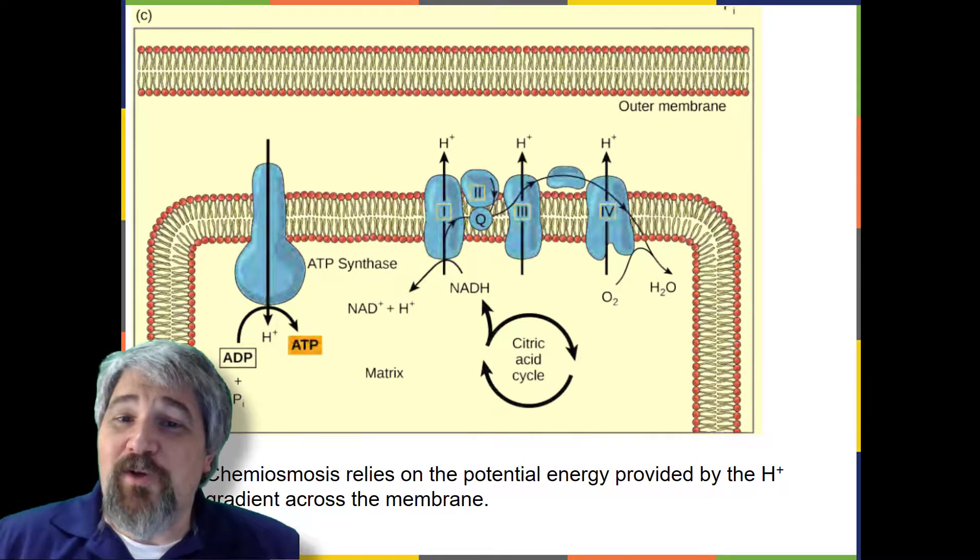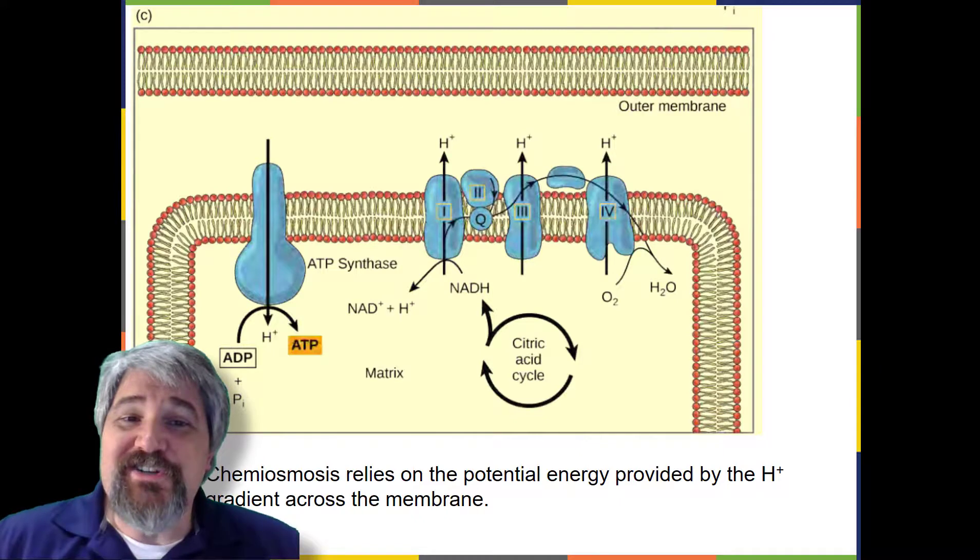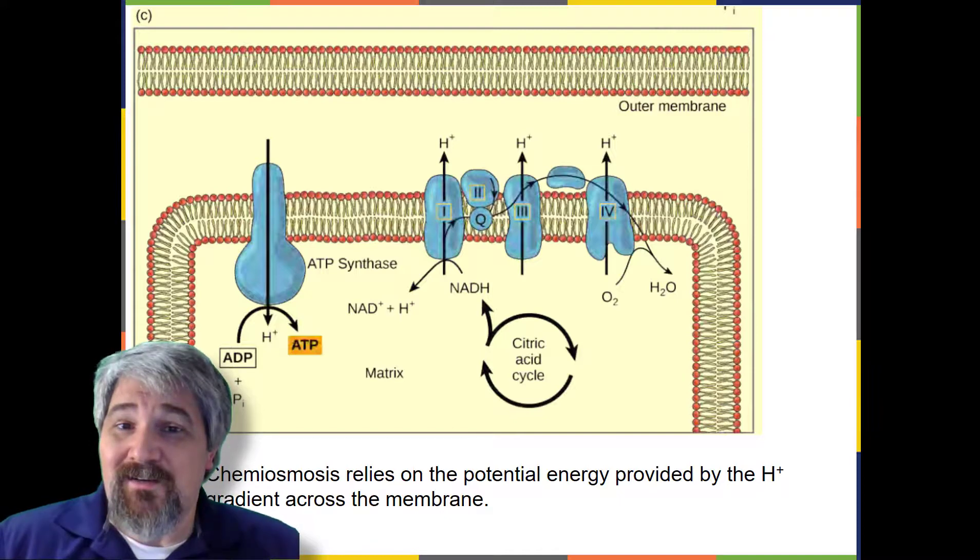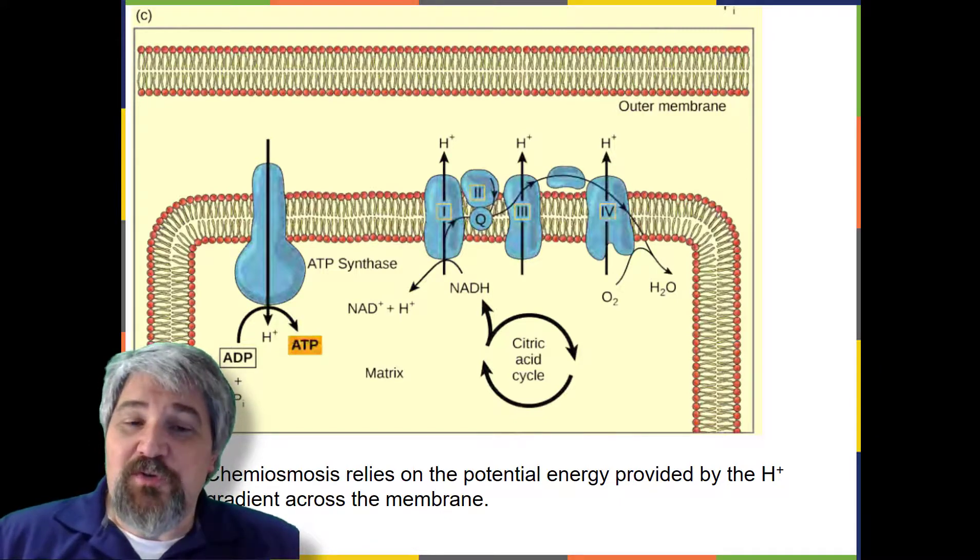In the electron transport chain, the free energy from the series of reactions just described is used to pump hydrogen ions across the membrane. The uneven distribution of hydrogen ions across the membrane establishes an electrochemical gradient owing to the hydrogen ion's positive charge and their higher concentration on one side of the membrane.